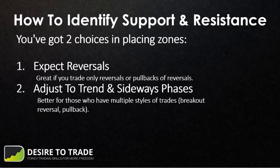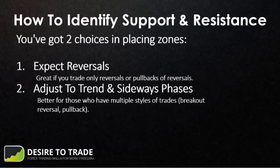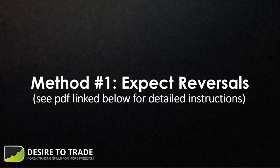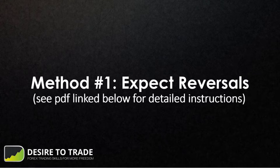The second way is to adjust to the trend and sideways phases. That method takes into account when the market is trending and when it's sideways, and it's much better for people who have different styles of trading — for example, if you trade breakouts, reversals, and pullbacks. Check out the PDF link below — I've prepared a guide that teaches you some strategies and how to look at the zones the right way with these two methods.